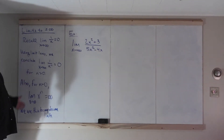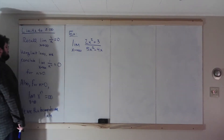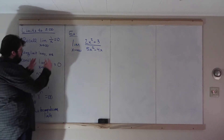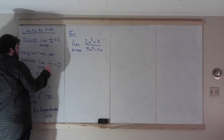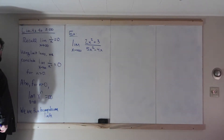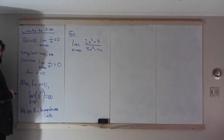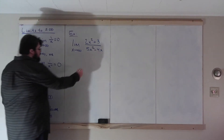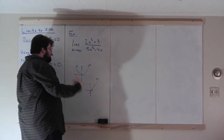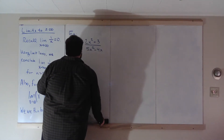First, we'll recall from the graph: as x goes to infinity, 1/x goes to 0. And with limit laws — rule 7 said you could raise functions to n — so 1/xⁿ equals 1/xⁿ, and 0ⁿ is 0. So as x goes to infinity, 1/xⁿ → 0 for any n > 0. Also, for n > 0, as x goes to infinity, xⁿ goes to infinity, as you can see with a parabola or a cube. We'll keep those in mind when computing some limits.